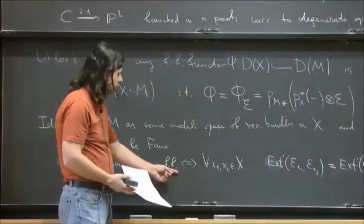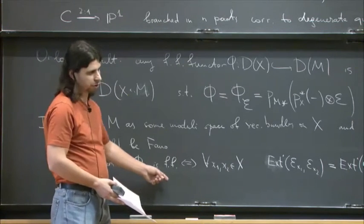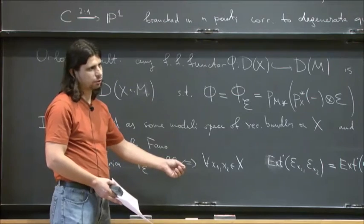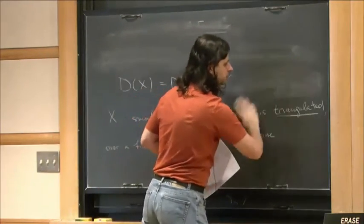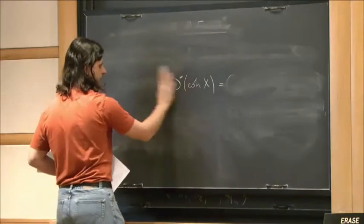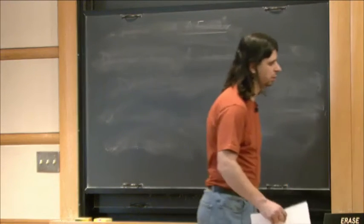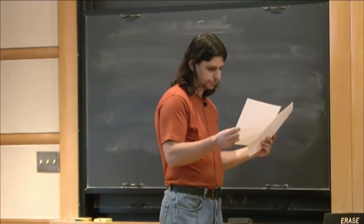Once we know the functor is fully faithful, it follows that it extends to a semi-orthogonal decomposition, since there is always an adjoint functor, and whenever a fully faithful embedding has an adjoint it extends to a semi-orthogonal decomposition — this is a simple exercise. The adjoint kernel is the dual bundle twisted by the pullback of the canonical class and shifted by the dimension, depending on whether one wants the left or right adjoint.